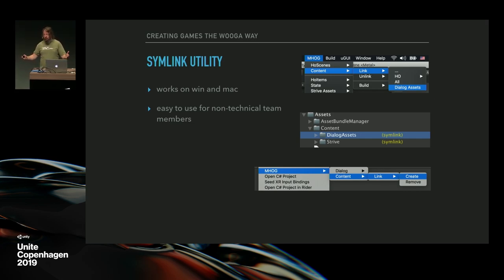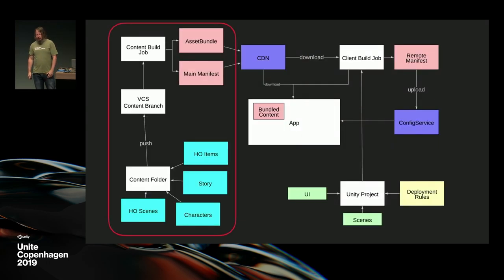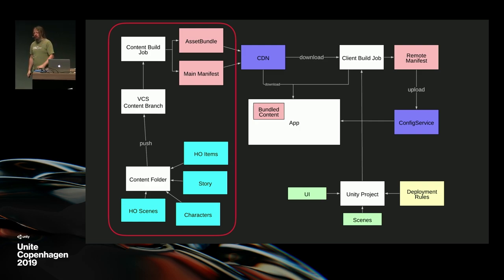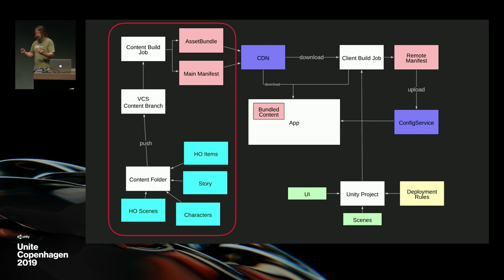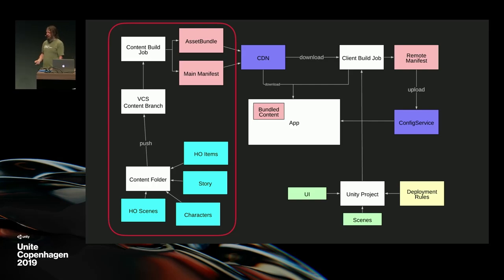How do we get the content into the game? We have a content folder — every time you make a change and push to version control, it fires off a build job on our Jenkins servers, which know how to build the asset bundles and which ones to build. It then creates all the asset bundles together with the main manifest and uploads everything to the CDN. Now all our content is online.